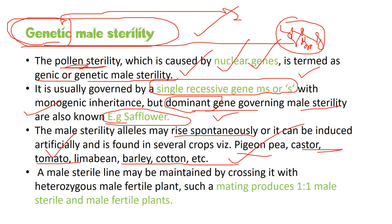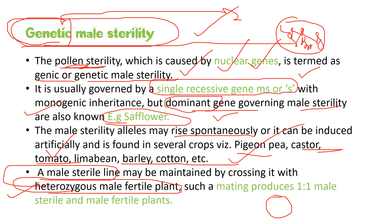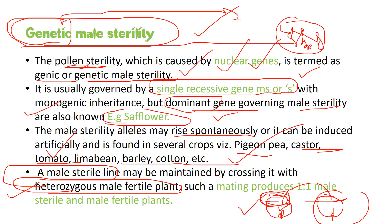To maintain a male sterile line, you must cross it with a heterozygous male fertile plant. The male sterile plant has a functional female part but a non-functional male part. When crossed with a plant that has a fertile male, the fusion produces a one-to-one ratio of male sterile to male fertile plants.